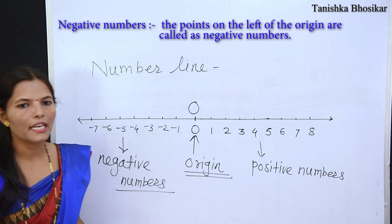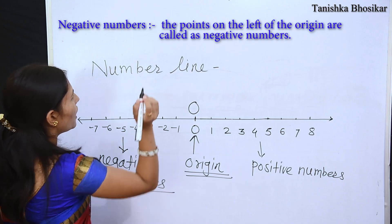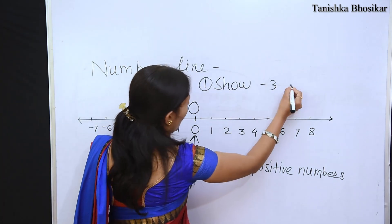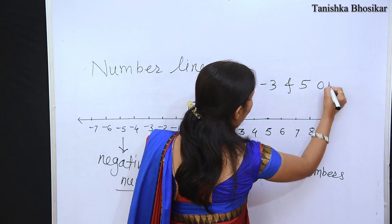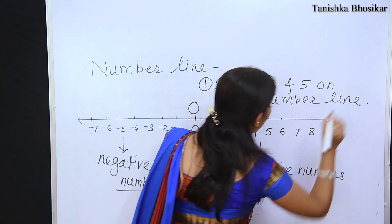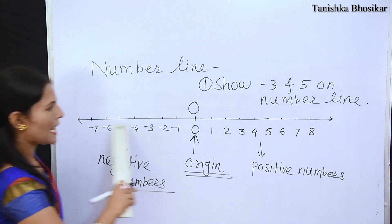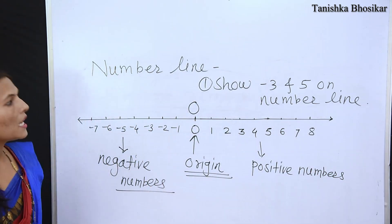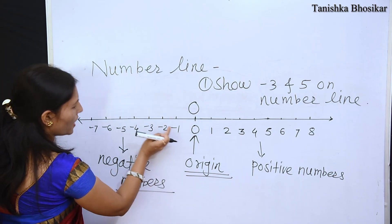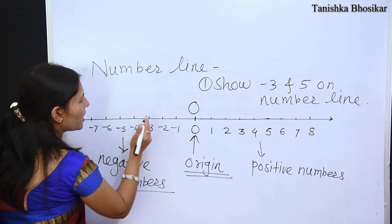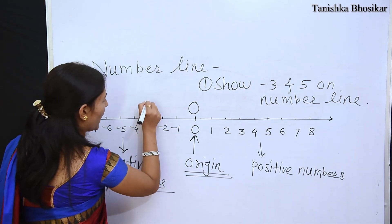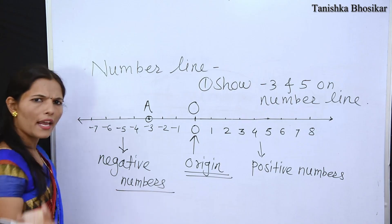In this way you can draw the number line. Suppose you have to show minus 3 and 5 on the number line. You have to draw the number line and show what is required. You show minus 1, minus 2, and minus 3 on the left side. Then you show 5 on the right side. You indicate those points on the number line.